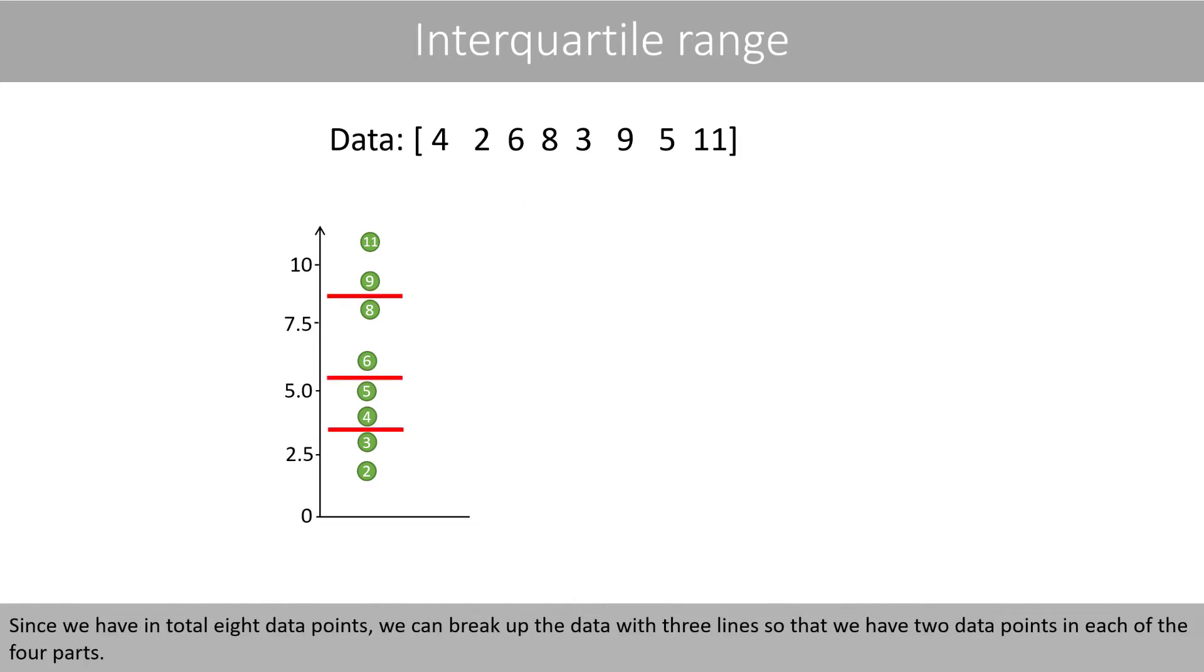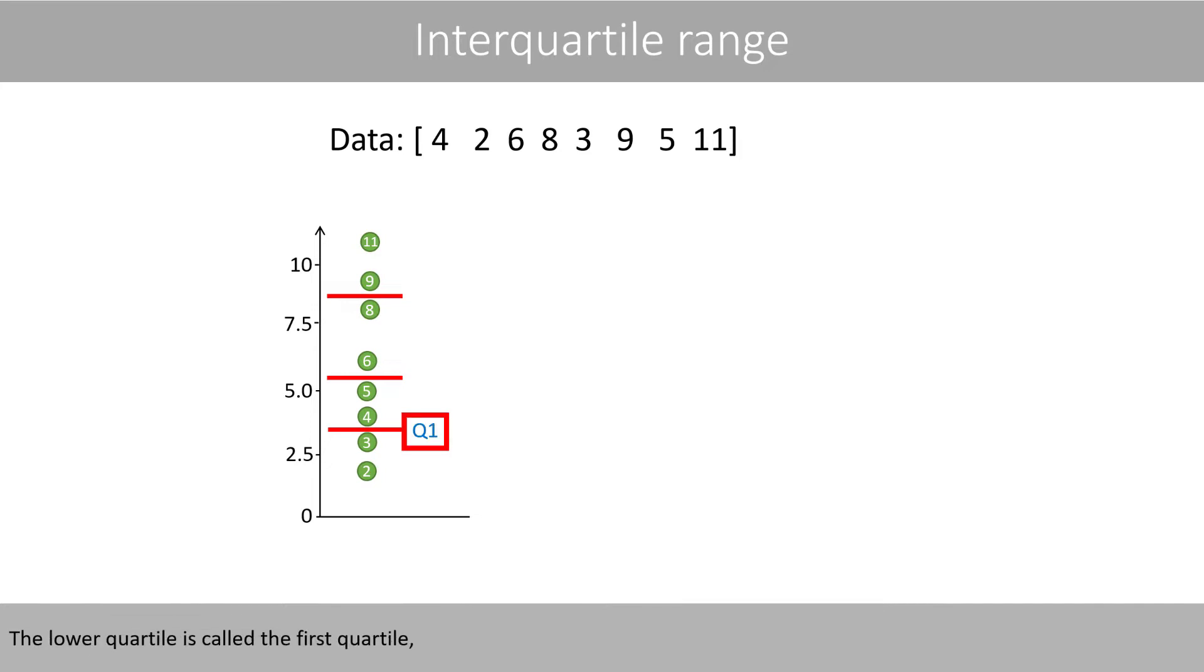Since we have in total eight datapoints, we can break up the data with three lines so that we have two datapoints in each of the four parts. The lower quartile is called the first quartile, whereas the upper part of the box represents quartile three.